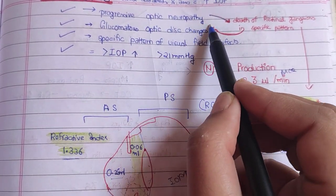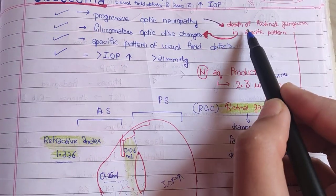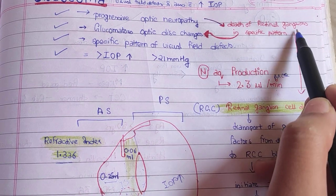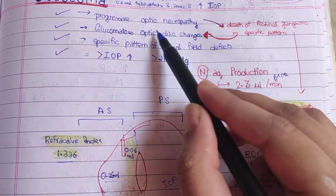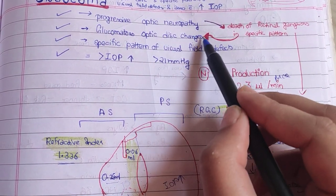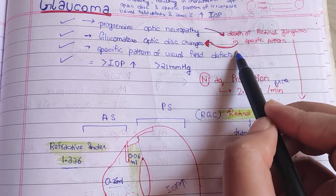The reason optic neuropathy occurs is that there is death of retinal ganglion cells in a specific pattern, which leads to glaucomatous optic disc changes in specific patterns.